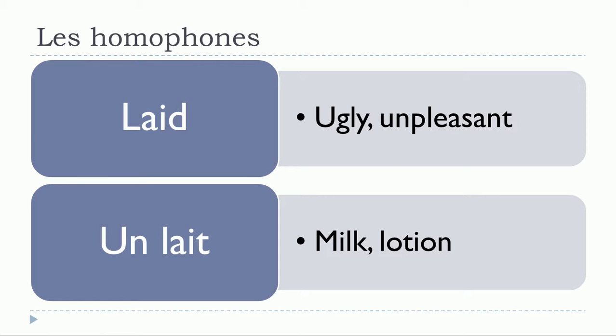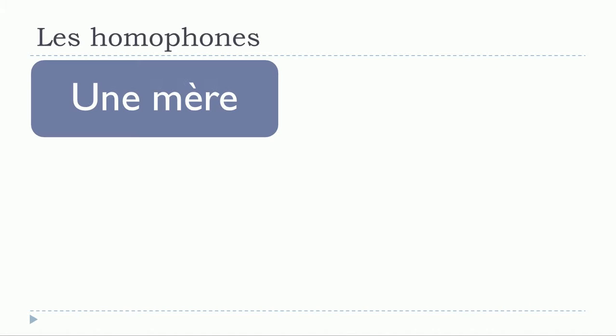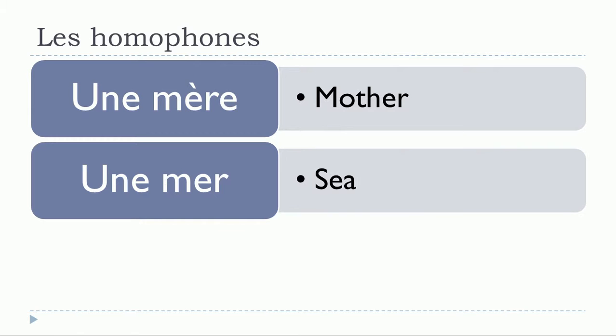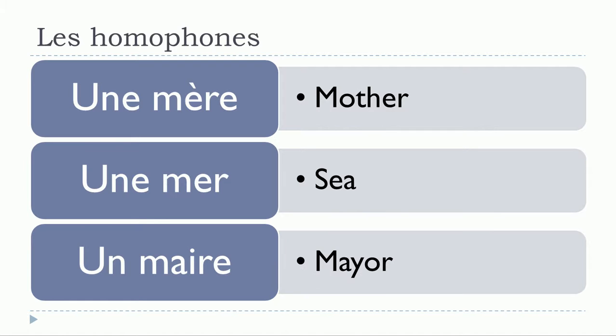The only difference is the final letters here. You don't pronounce them, so phonetically you only have this sound: une mer, une mère, un maire. So mer, mère, maire. In both cases here you've got the feminine form, and then here it's masculine. Of course, it could be feminine as well because mayors can be ladies as well.